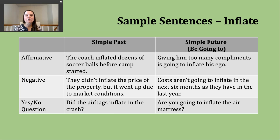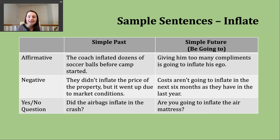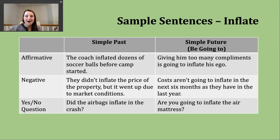For the negative simple future, the structure is subject + form of be + not + going to + base verb. An example: car costs aren't going to inflate in the next six months as they have in the last year. This is a prediction some economists have made about costs continuing to rise.